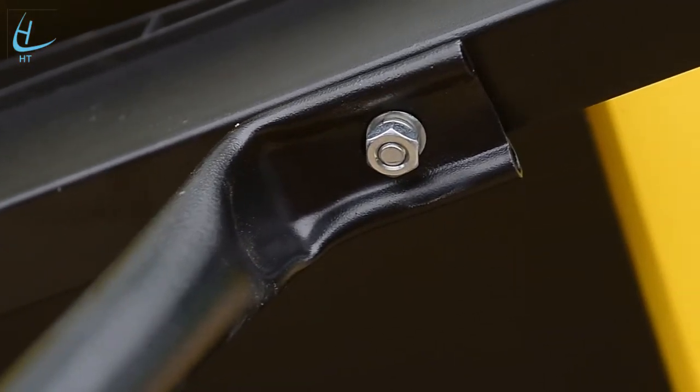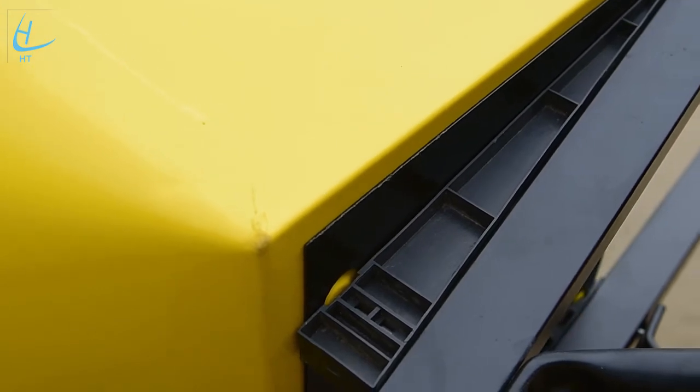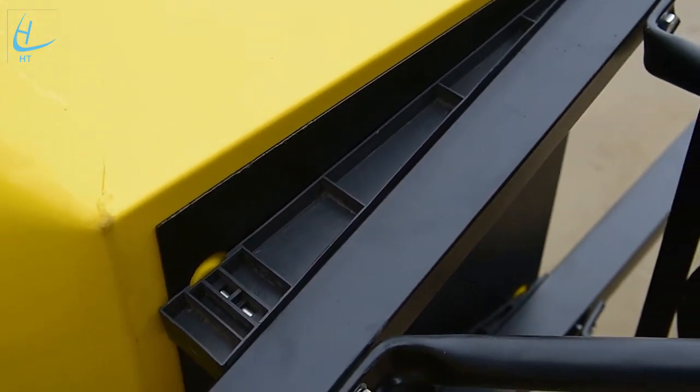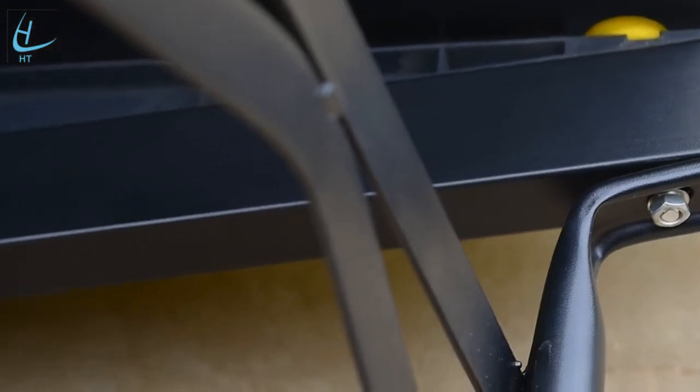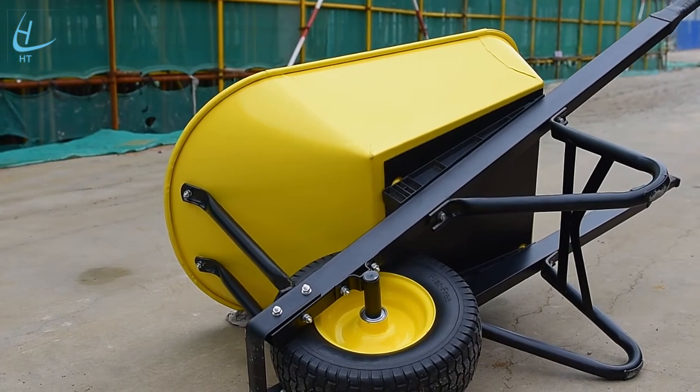Powder-coated steel legs with 3.0mm thickness and steel front support. Wheel guard size is 50x3.5mm.